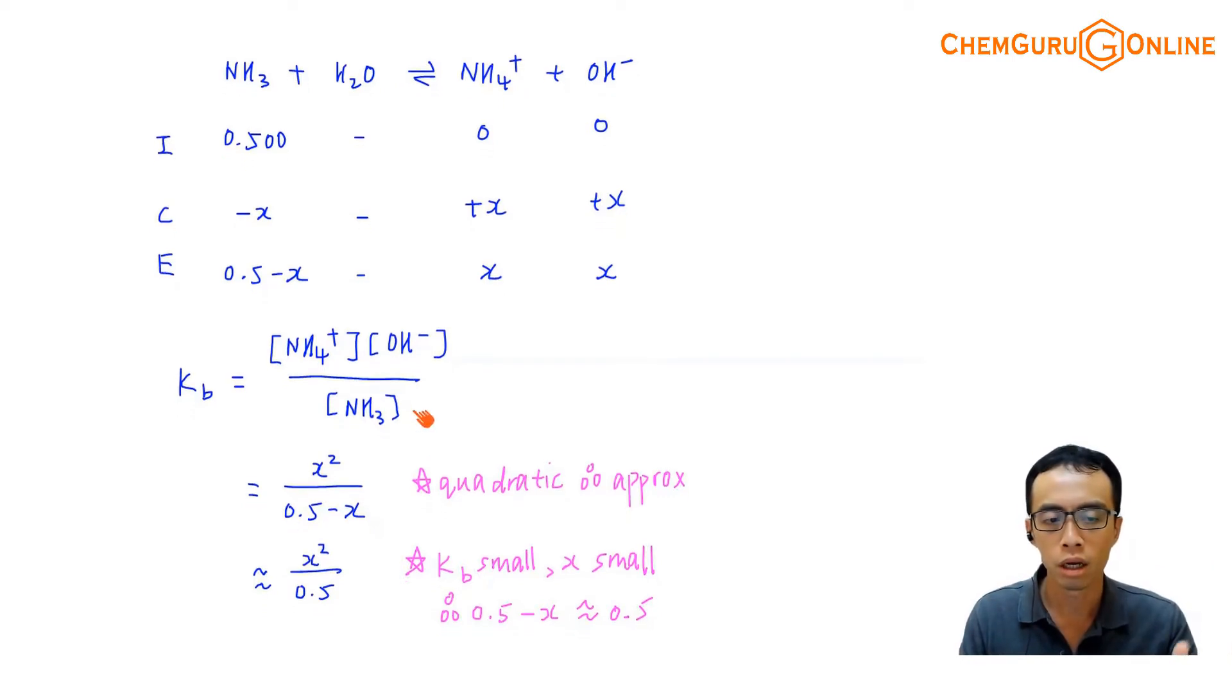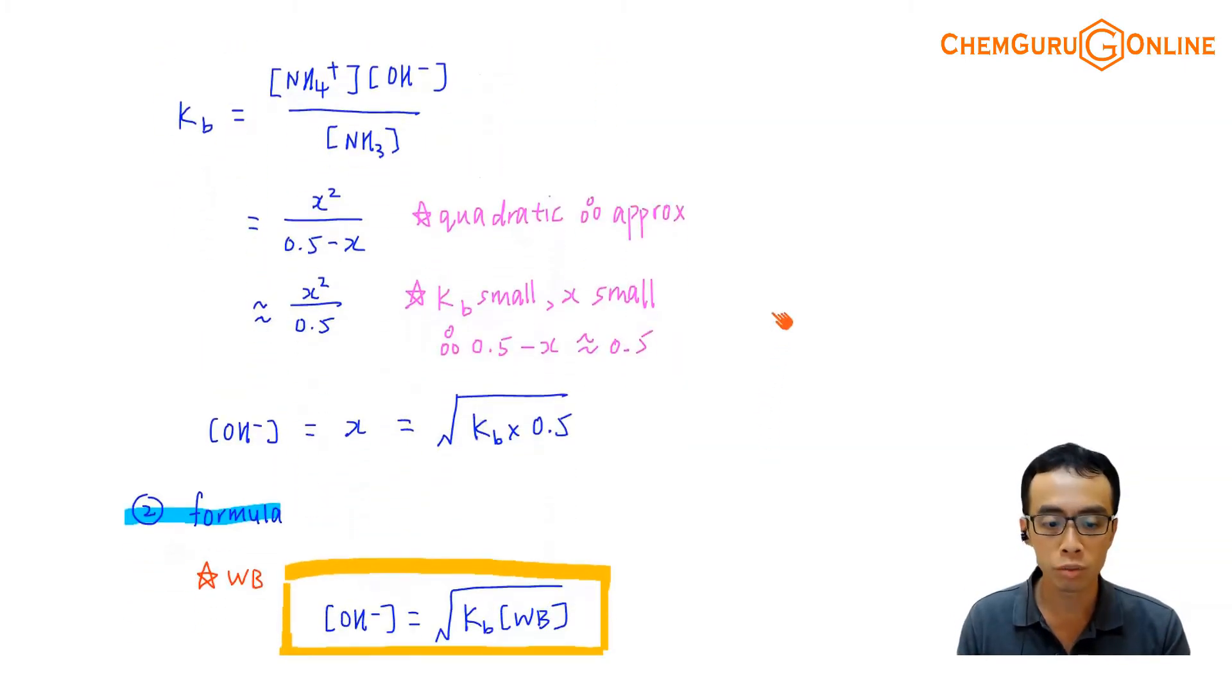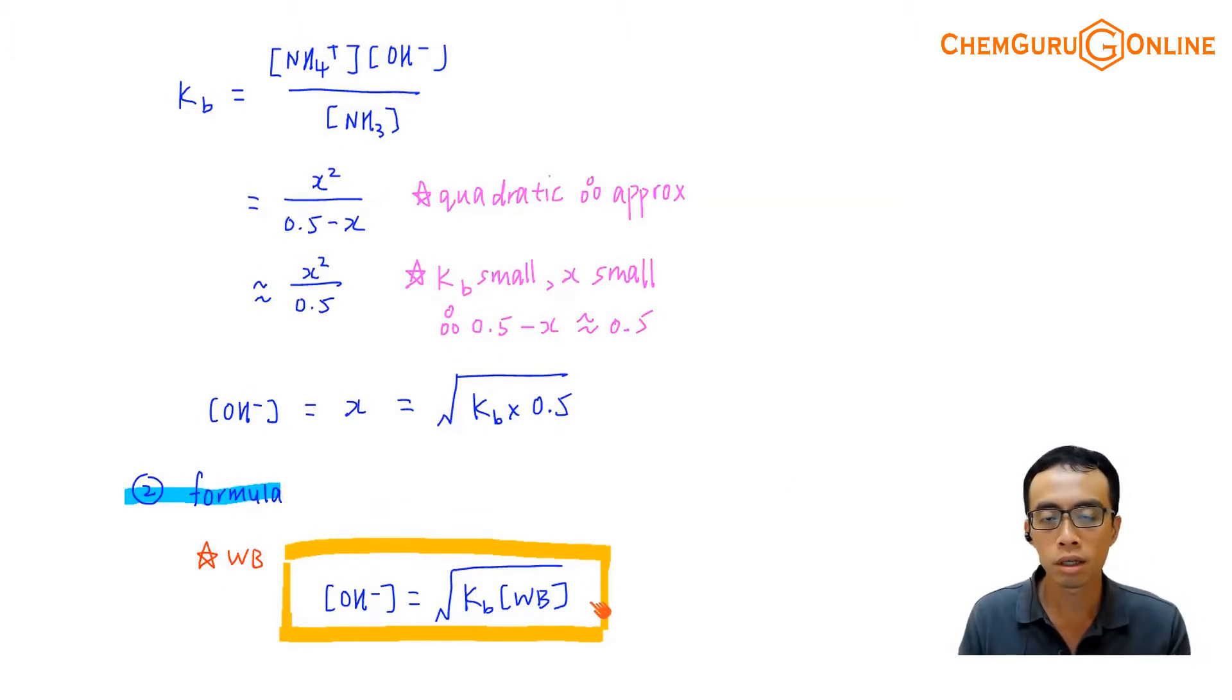Kb is the concentration of the product divided by the reactant, which is x² divided by 0.5-x. This is a quadratic equation, therefore this is a trigger to do approximation. The approximation: 0.5-x is roughly equals to 0.5 because this is a weak base, K is small, degree of dissociation is small. Therefore when we rearrange, OH- concentration is the square root of Kb times the base concentration.